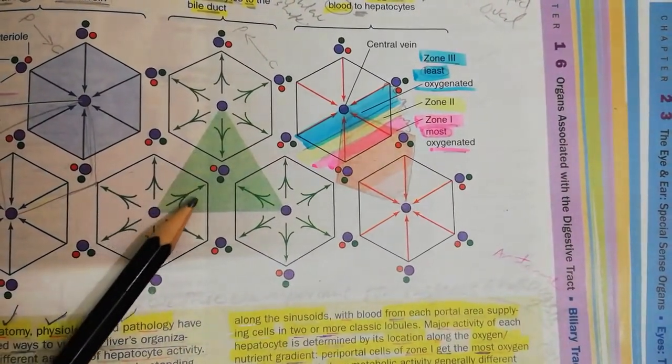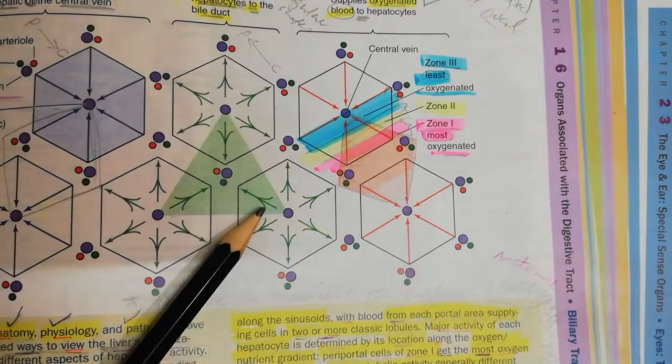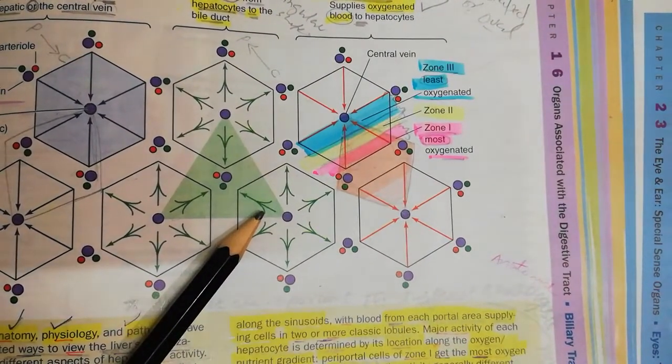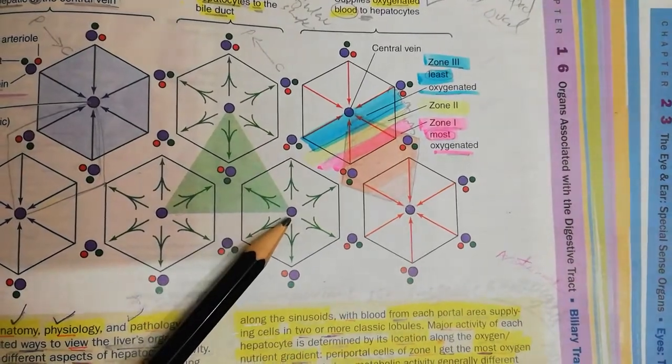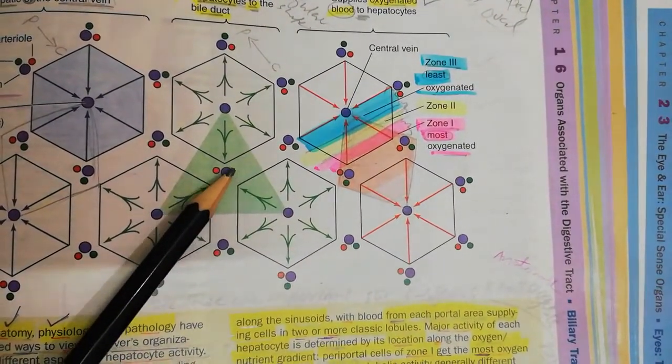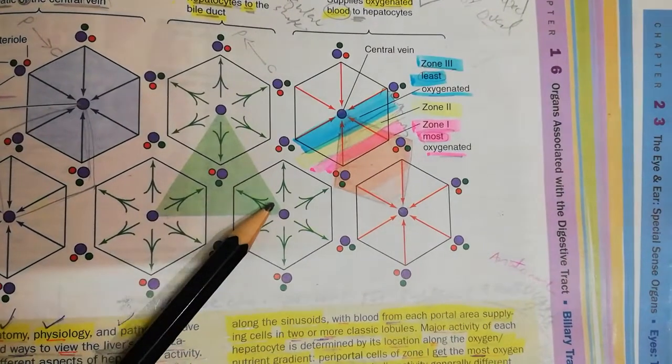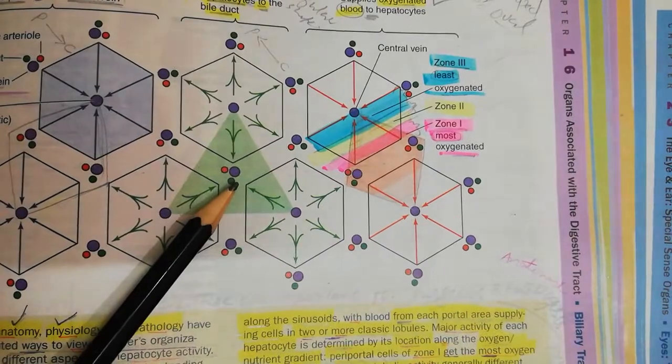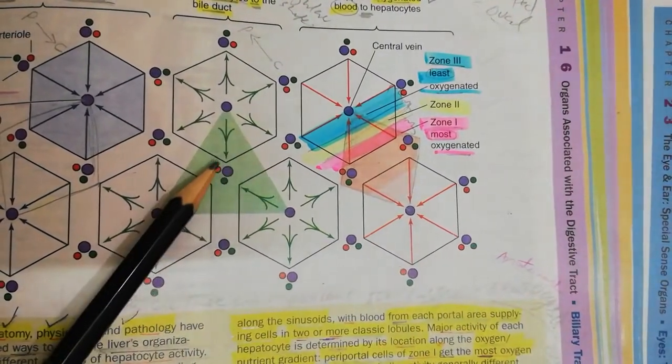This portal lobule in a triangular shape area you can observe because the flow of bile is from the center towards the periphery. From this picture, we can see the direction of flow from all three sides. So we consider this portal lobule area.